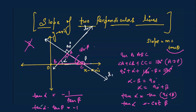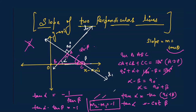Since tan(theta) represents the slope, tan(alpha) is the slope of line L2, which we call m2, and tan(beta) is the slope of line L1, which we call m1. Therefore, m1 times m2 equals minus 1. This is the result: the product of the slopes of two perpendicular lines equals minus 1.